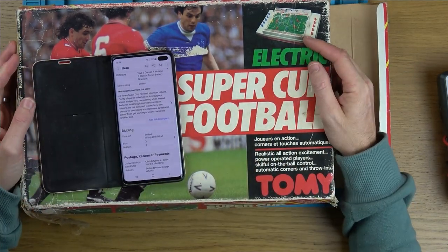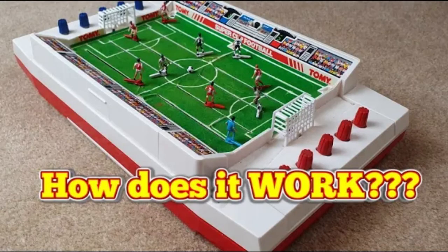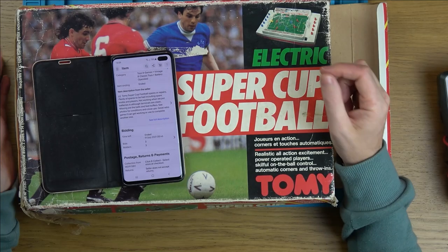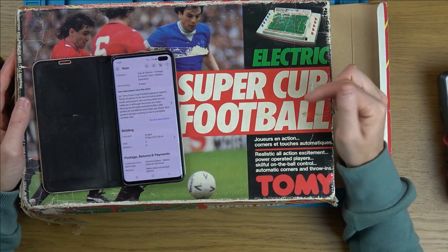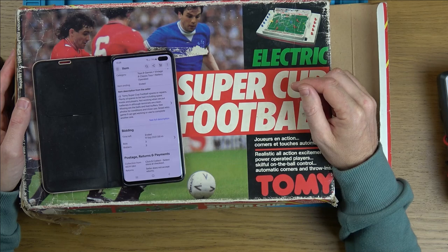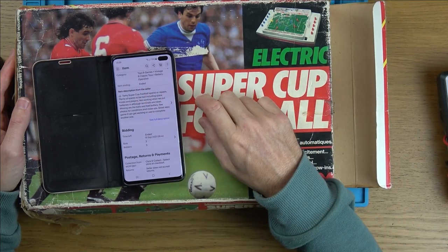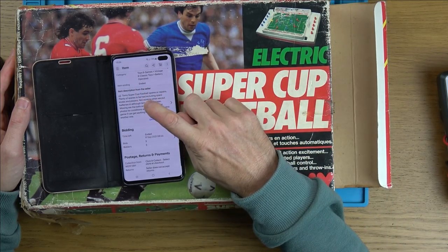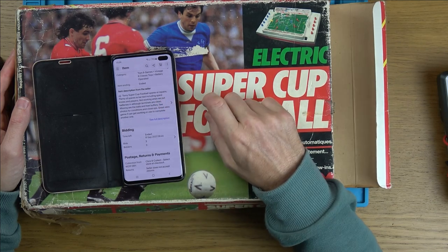I've featured this on my channel before in a how-it-works video where I completely stripped it down and tried to work out what was going on, so I feel very confident in getting this one working. I bought it from eBay for a little over 20 UK pounds. It says Tomy Super Cup Football spares or repair, plenty of spares to be had including spare knobs and players, not working when we put batteries in although terminals are clean. Missing are the balls and the feet buffers.